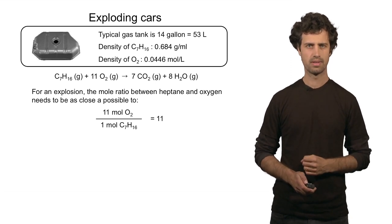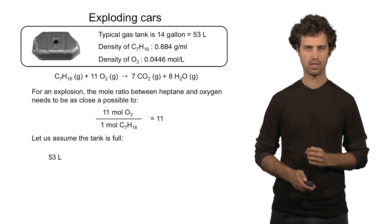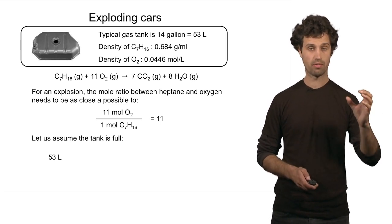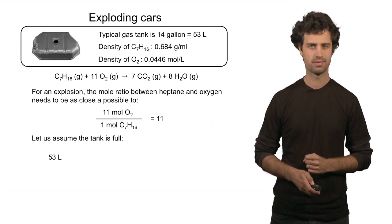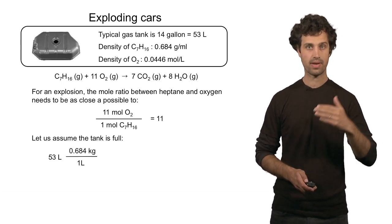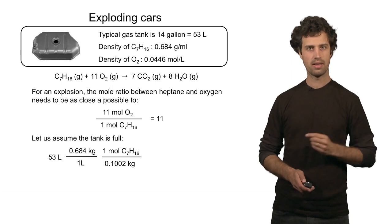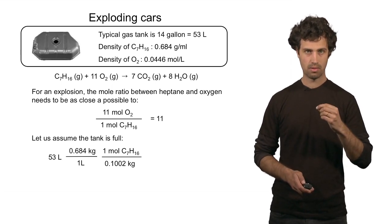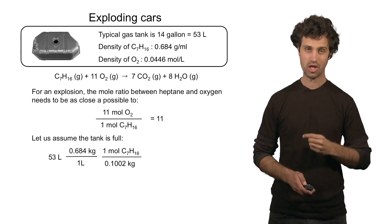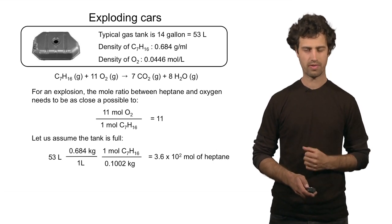Let's look at case number 1. Case number 1 is when I have a full tank of gasoline. That means 53 liters of heptane. How many moles is that? I have to do some conversions, convert from volume in liters to number of moles. If I multiply volume by density, I get mass. And if I then divide mass by the molar mass, I find the number of moles. Note here that the molar mass is expressed in kilograms per mole. That's because the density here is expressed in kilograms per liter. I find a total of 3.6 times 10 to the second moles of heptane.